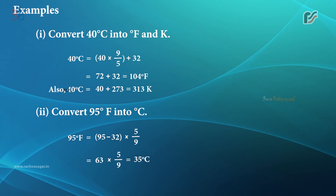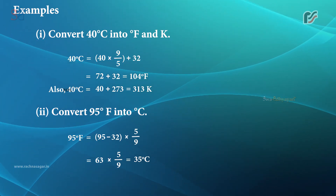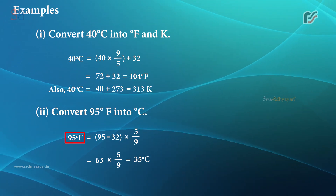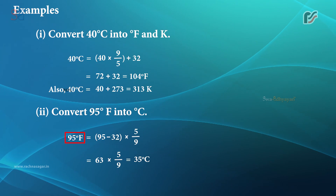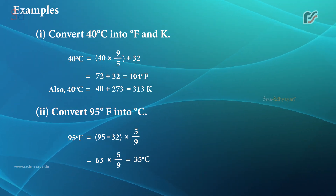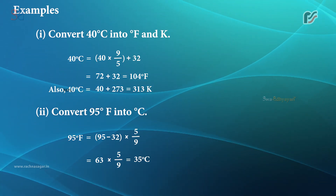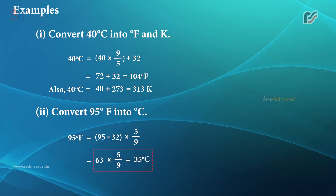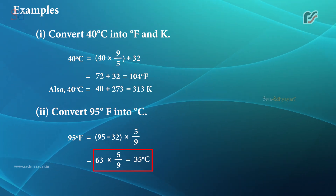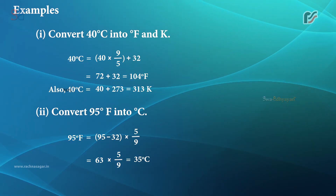Example 2: Convert 95 degree Fahrenheit into degree Celsius. 95°F = (95 − 32) × 5/9 = 63 × 5/9 = 35 degree Celsius.